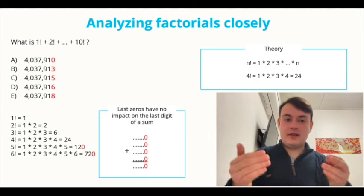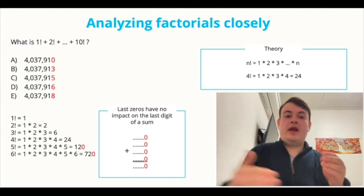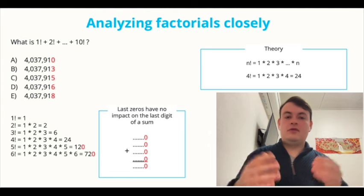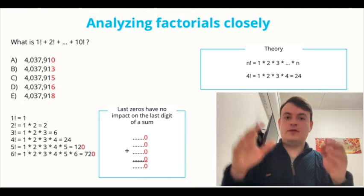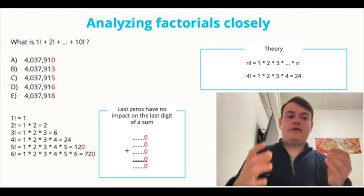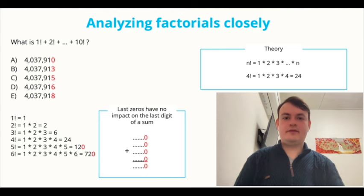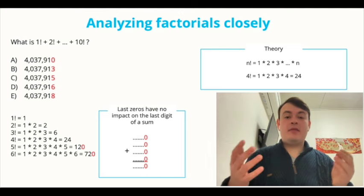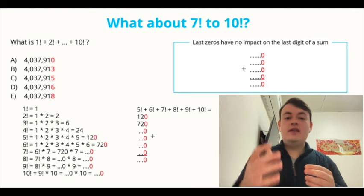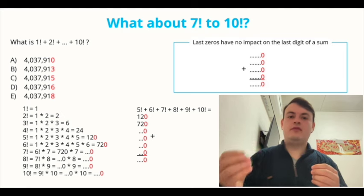These two factorials, 5 and 6, they have no impact whatsoever on the last digit of our sum. If we add zero, the last digit of 5 and 6 factorial to it, well, this whole sum of factorials from 1 to 10 will not change. Let's actually see if the pattern continues for the remaining factorials. If we remember how we were finding each of the previous factorials, we can see that to find a new factorial, we have to multiply the previous one by a new number.